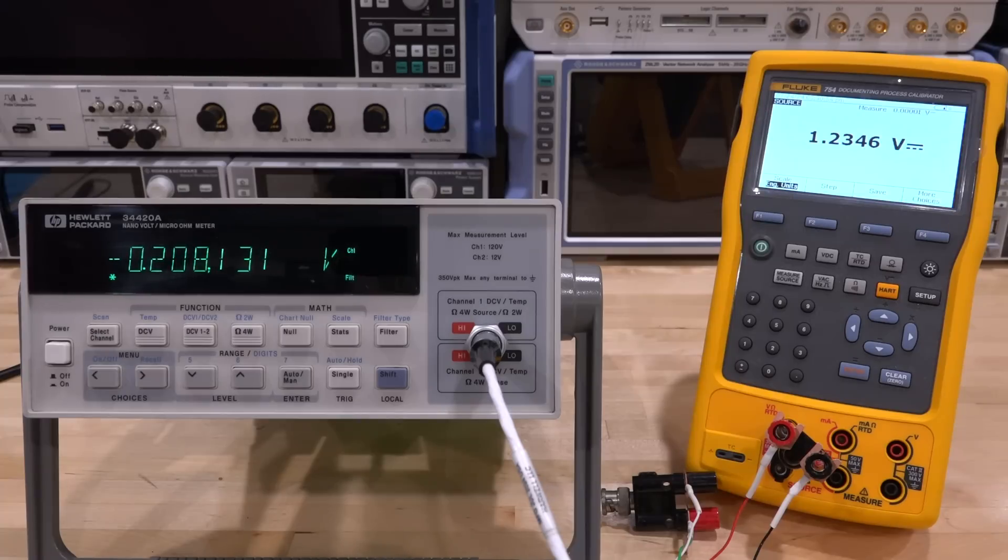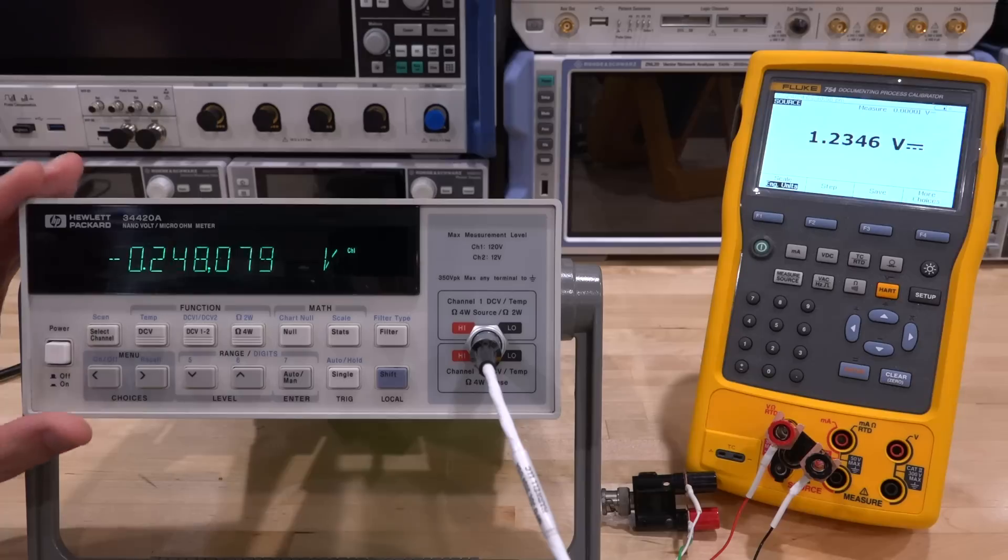Hi, welcome to the SignalPath. In this episode we're going to try another repair. This is an HP 34420A, and Keysight still makes these instruments. These are nanovoltmeter micro-ohmmeter units, very accurate especially for measuring very small voltages.